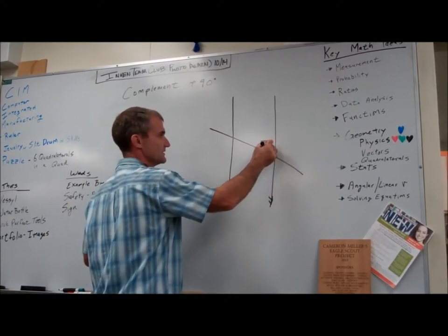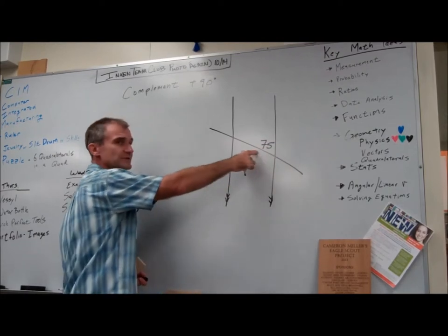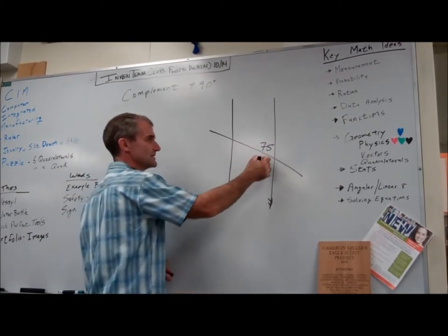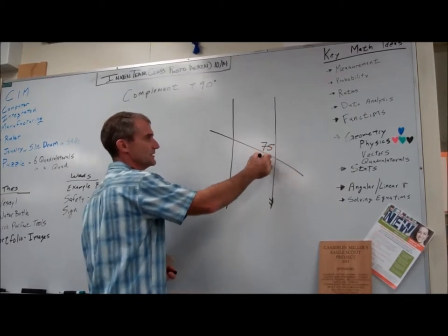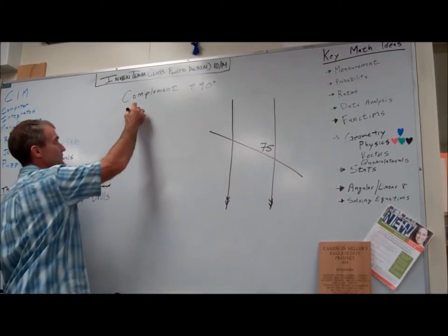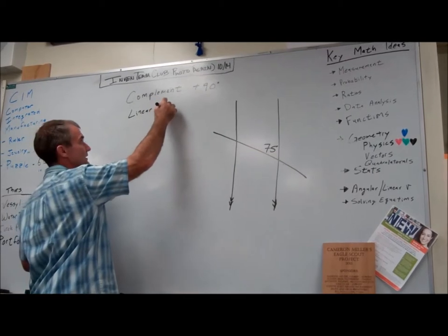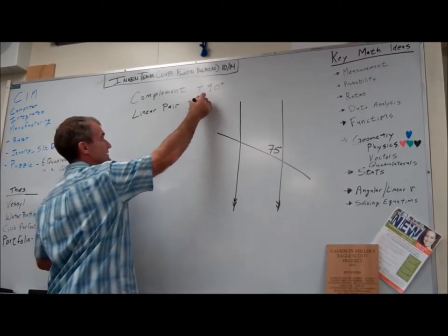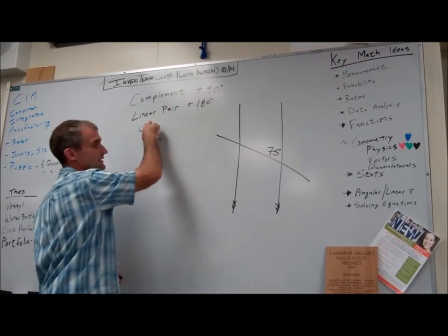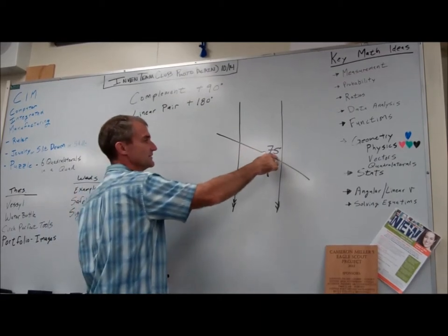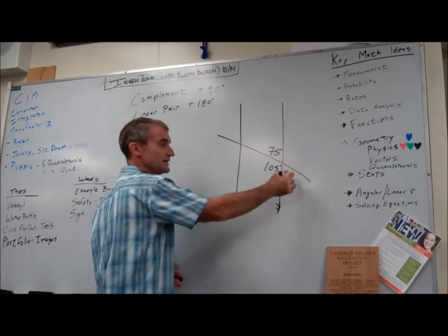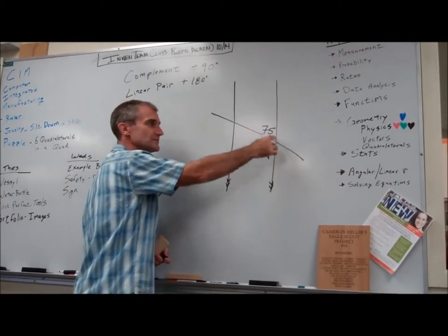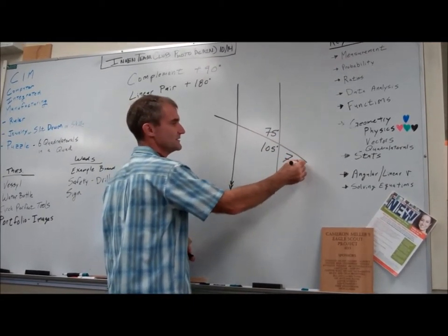This angle right here is 75 degrees, the complement of the 15. This angle right here is its linear pair. So a linear pair are two angles that add up to 180. So a linear pair are two angles that form a straight line. So if this is 75, this right here is 105. This angle right here is the same as this angle. That's called a vertical angle. So that's 75 degrees.